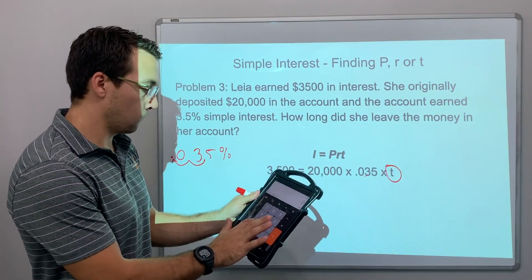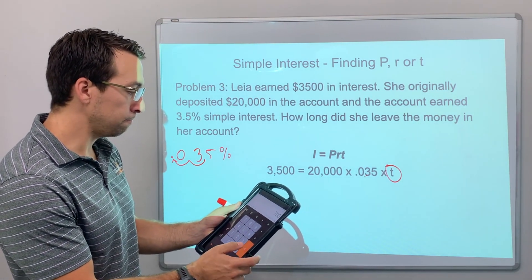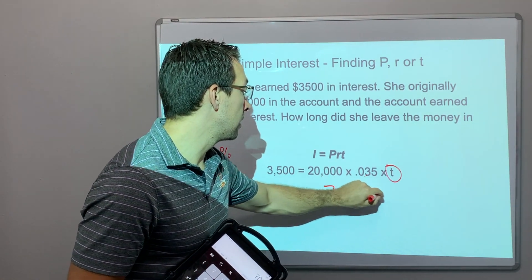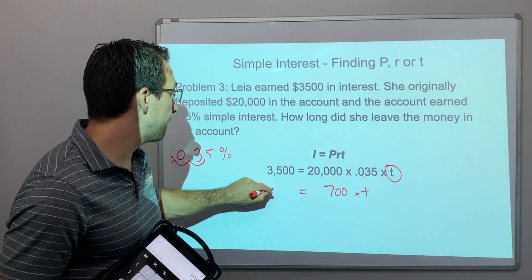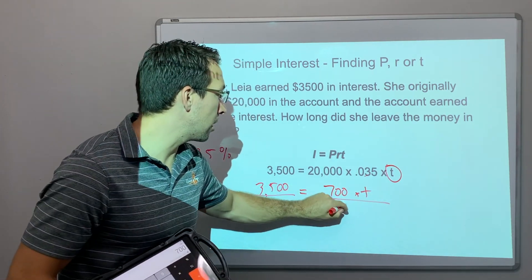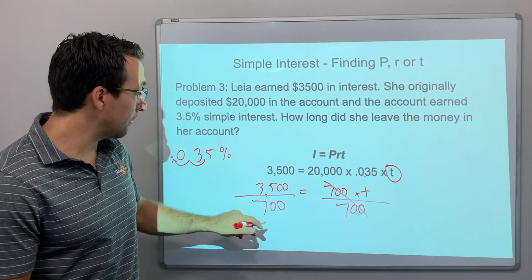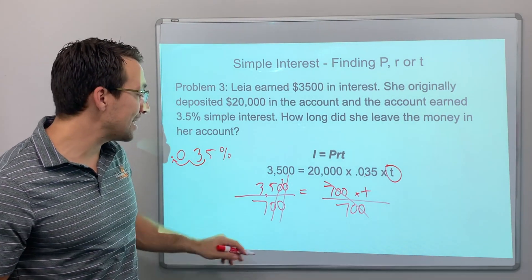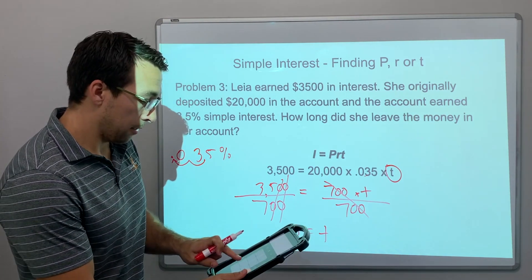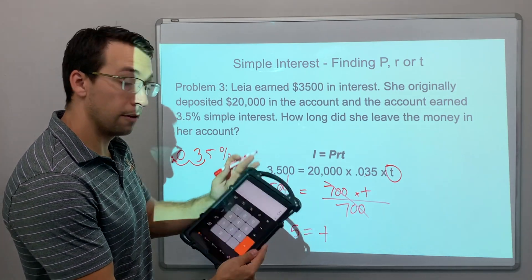So 20,000 times .035 equals 700. So 700 times T equals 3,500. What's 3,500 divided by 700? We divide both sides. Cancel out the zeros — 35 divided by 7 is 5. So T equals 5, and let's verify on the calculator: 3,500 divided by 700 equals 5.